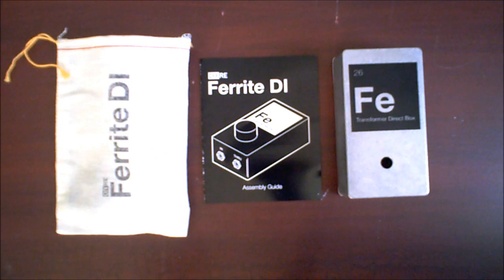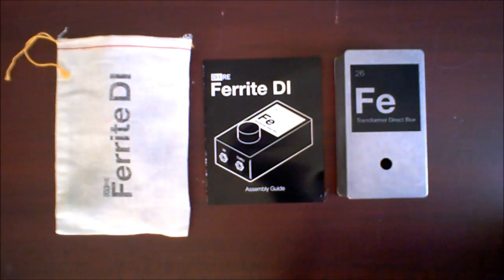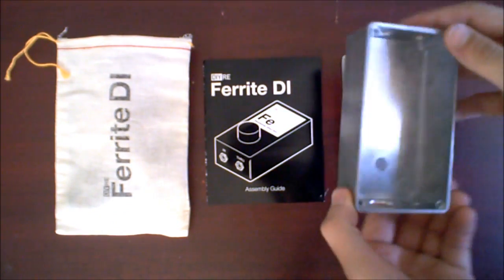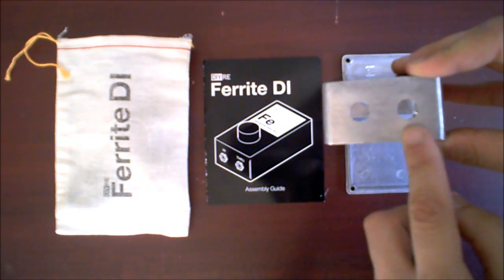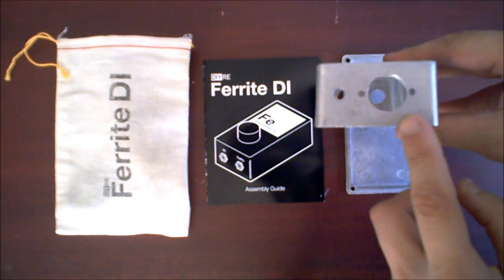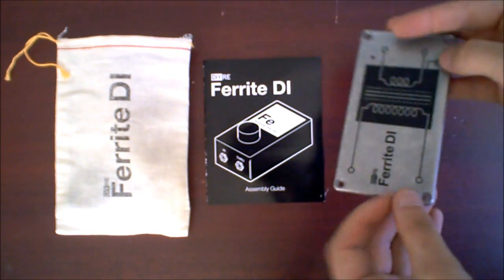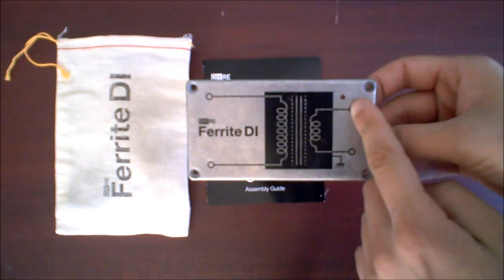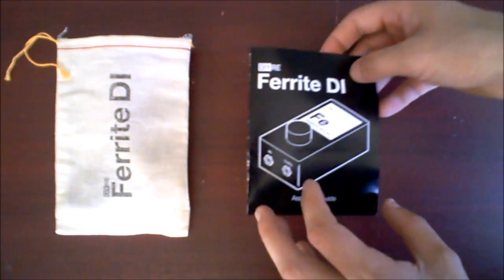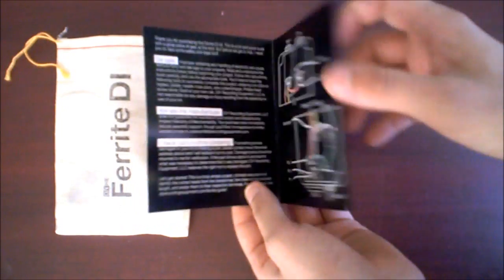Parts and tools. Let's look at the kit. First, we've got our die-cast aluminum case here with a mounting hole for the transformer, two quarter-inch jack holes for the in and through XLR output jack, and a hole for the ground lift switch. On the lid, there's a hole for the ground connection to the case, which we'll do later.